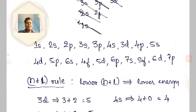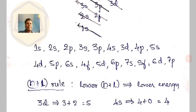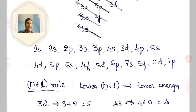Within the Aufbau principle there is one more aspect, something called the n plus l rule. Based on this n plus l rule, you can easily decide which orbital has higher energy and which has lower energy. Lower the value of n plus l, lower will be the energy — it's very simple.